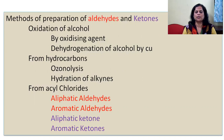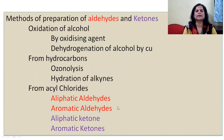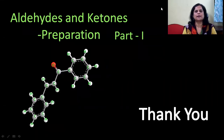So these are the methods for preparation of aldehydes and ketones that we completed in part one: oxidation of alcohol by oxidizing agents, dehydrogenation of alcohol by copper, ozonolysis of alkenes and hydration of alkynes from hydrocarbons, and from acyl chlorides we prepared aliphatic and aromatic aldehydes and ketones. Thank you.